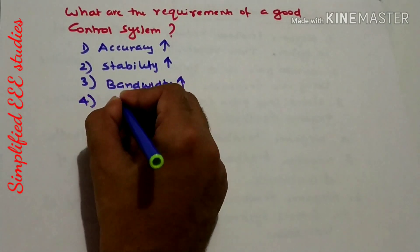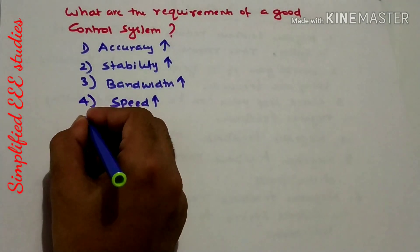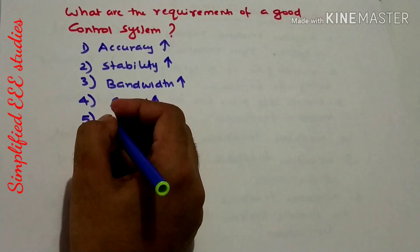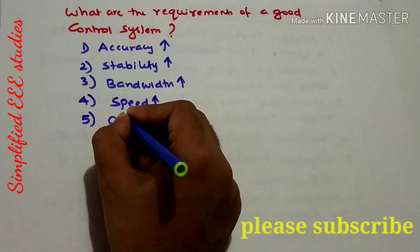Time response, or you can call it speed. Operating speed should be very high. It shouldn't have oscillation. That means oscillation should be as minimum as possible.